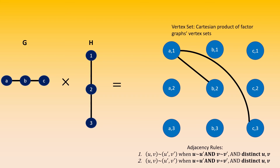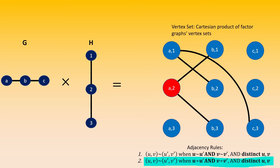Let's move on to A2. By the first rule, A2 is adjacent to any vertex with both distinct left entry adjacent to vertex A, and distinct right entry adjacent to vertex 2. That means A2 is adjacent to vertices B1 and B3. By the second rule, vertex A2 is adjacent to any vertex with both distinct left entry not adjacent to vertex A, and distinct right entry not adjacent to vertex 2. However, there is no vertex in the modular product with distinct right entry not adjacent to 2, because vertex 2 happens to be adjacent to every other vertex in the right graph H. Therefore, the second rule will not produce any more adjacencies for vertex A2.